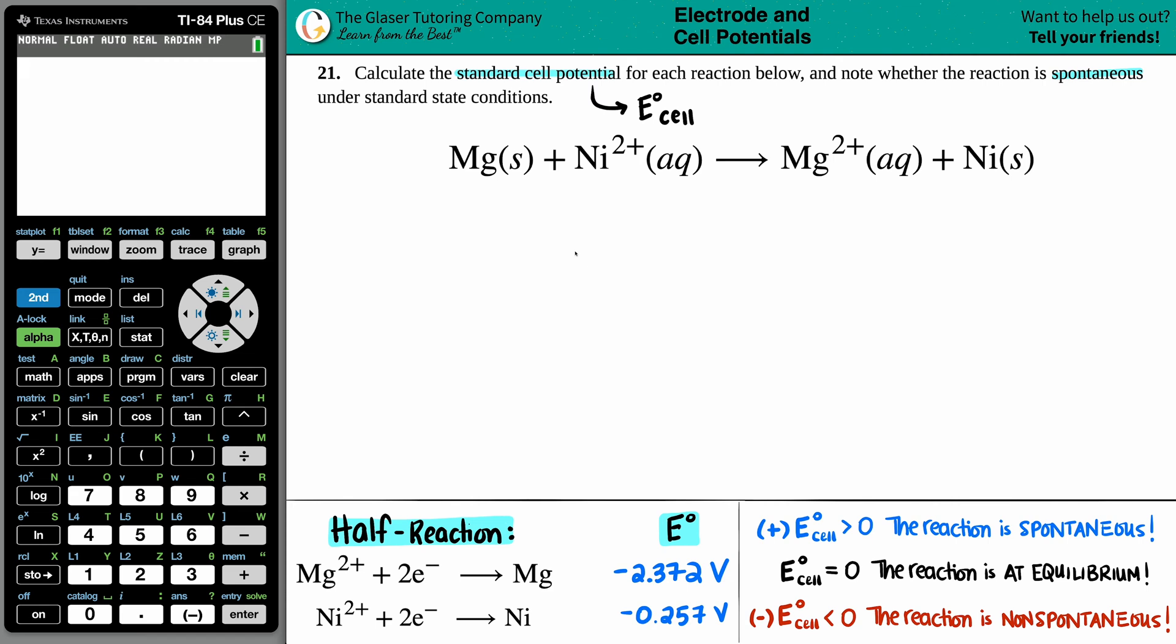The formula to find an E cell is pretty simple, pretty straightforward. The E cell, the standard potential, is just the voltage of a cathode minus the voltage or the E cell of an anode. But now the question is, what is a cathode and what is an anode?